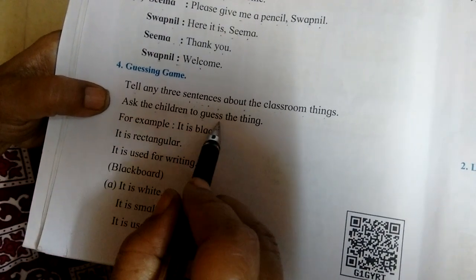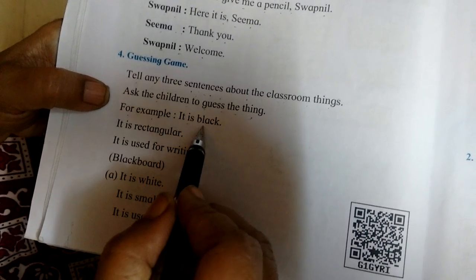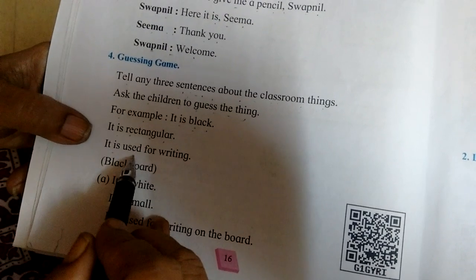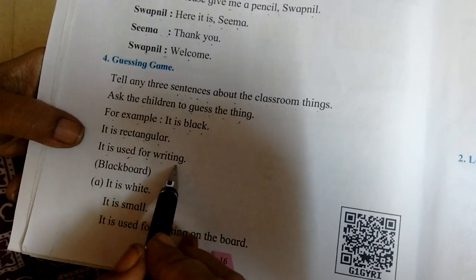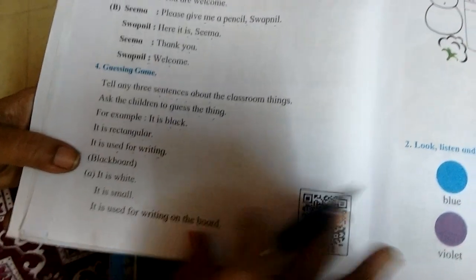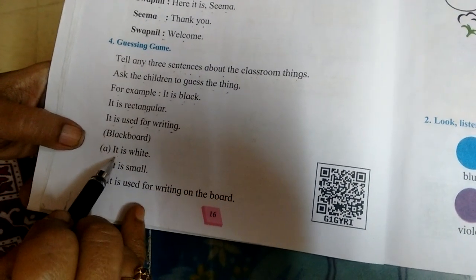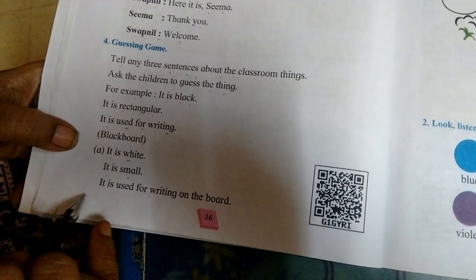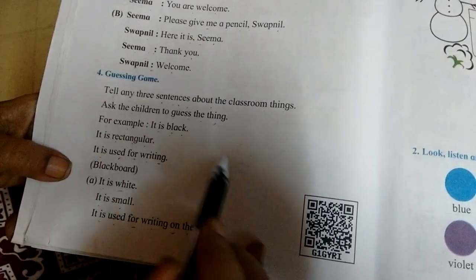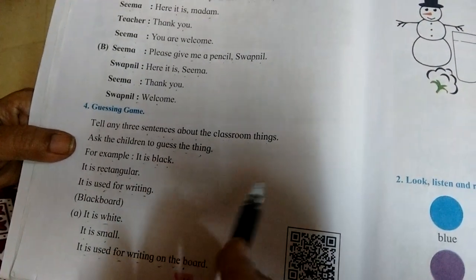Ask the children to name things. For example: 'It is black, it is rectangular, it is used for writing.' We have to take the things and name them. Say its colors also — 'It is white, it is small, it is used for writing on the board.' This is the group game. When you come back to school, we will play this game too.